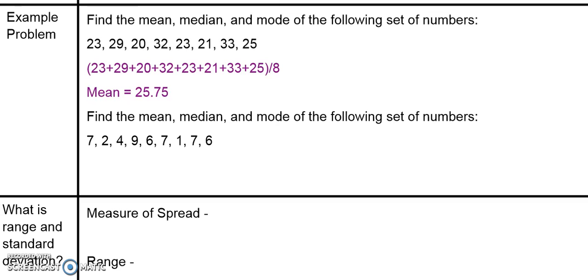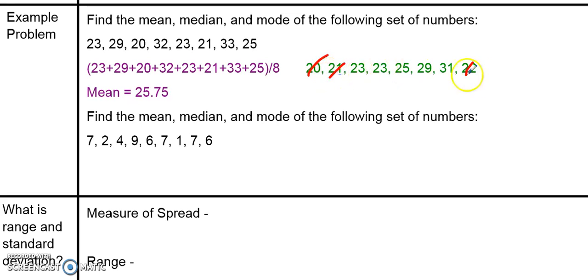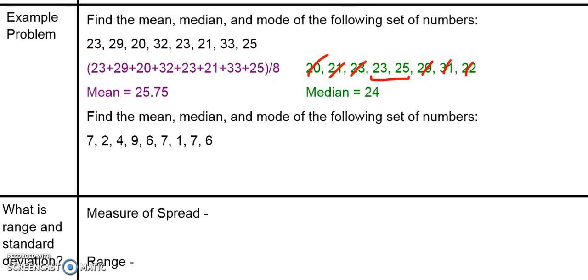Next, let's find the median. Remember, the median is the middle number when all the values are in order. So the first thing we need to do is order all of these values. I've put all the values in order, and now the median is that middle one. Since there are eight values, there are two middle numbers: 23 and 25. Neither one of them is going to be the median on its own. Instead, when there are two middle values, I take the mean — so I add 23 plus 25 and divide by 2. 23 plus 25 is 48, divided by 2 gives us a median of 24. That makes sense — it's about the center of this data set.